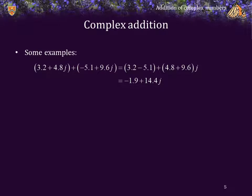So some examples. If we add the following two complex numbers on the left-hand side, all we do is add the two real components and add the two imaginary components multiplying the result by j. So the sum of these two is just negative 1.9 plus 14.4 j.